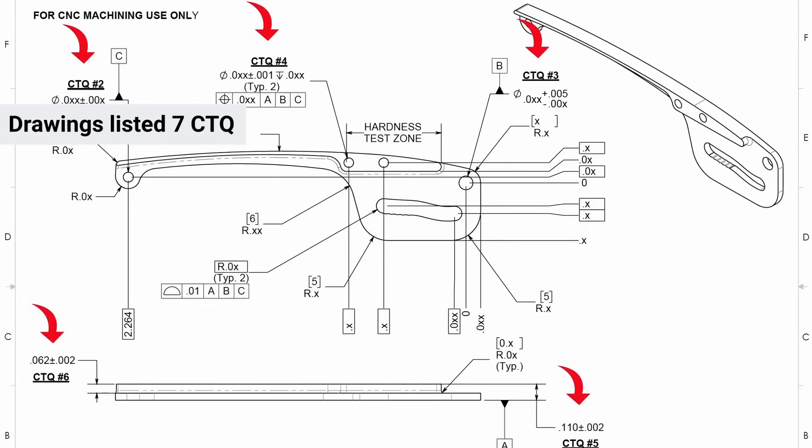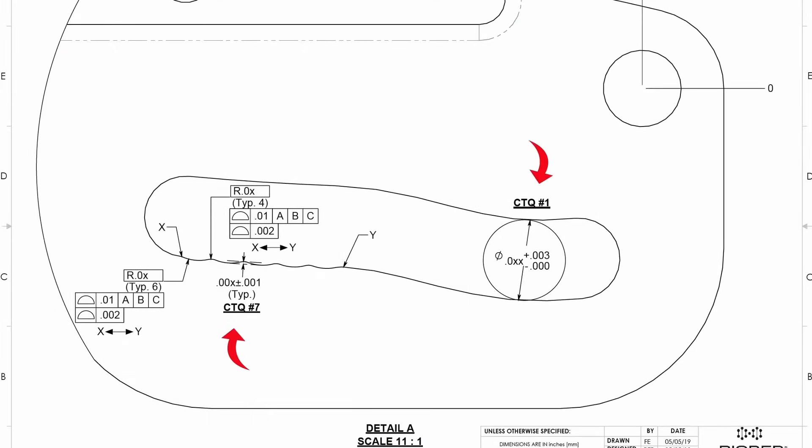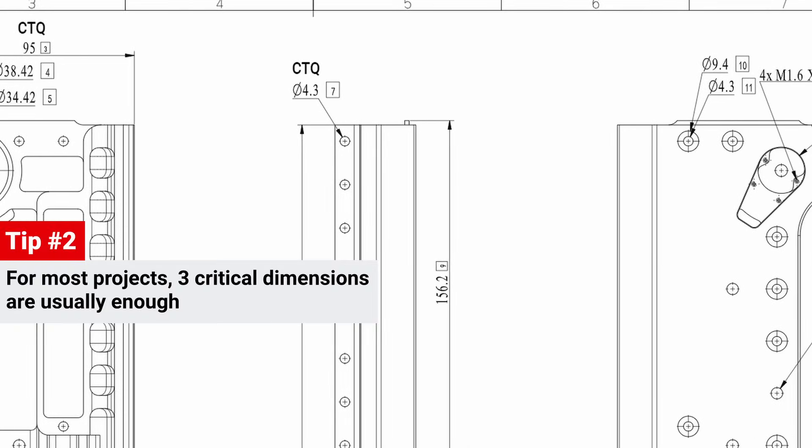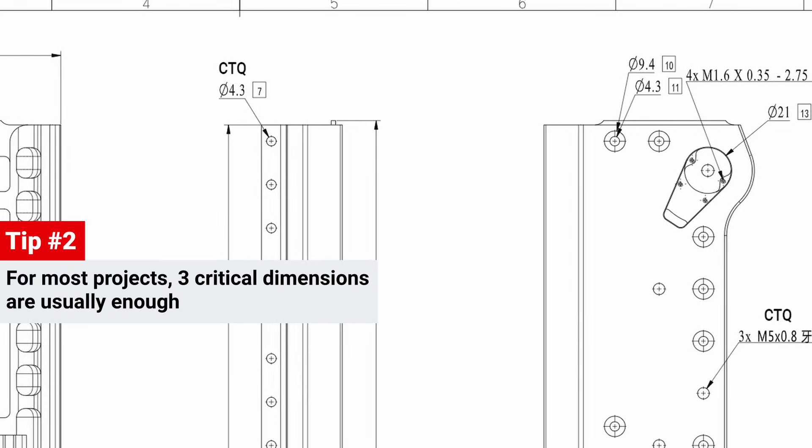The original drawings listed seven critical to quality dimensions, or CTQs. Frankly, that's a lot for any part, and on this project, it represented a special challenge. In most cases, even for very complex parts, three critical dimensions are usually enough.